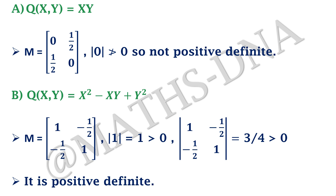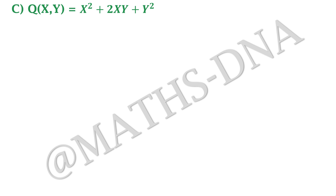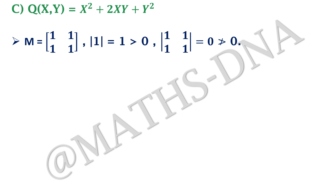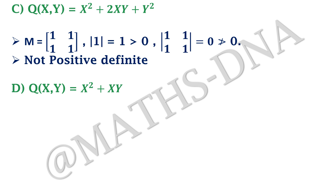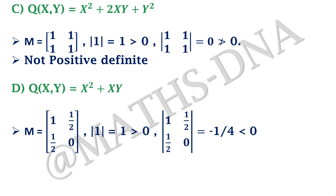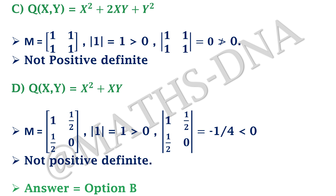Option C: Q(x,y) = x² + 2xy + y² gives M = [1, 1; 1, 1]. The first principal minor is 1 > 0, but det(M) = 0, which is not greater than 0 — so not positive definite. Option D: Q(x,y) = x² + xy gives M = [1, 1/2; 1/2, 0]. The second principal minor is −1/4 < 0, so not positive definite. The correct answer is option B.